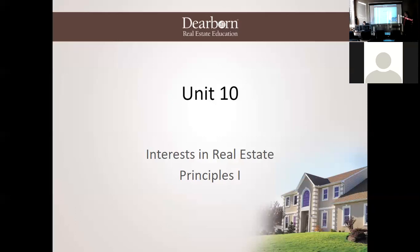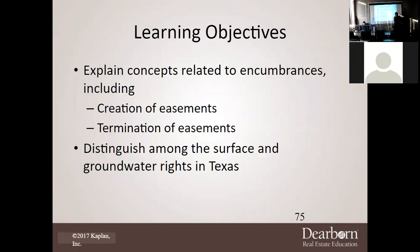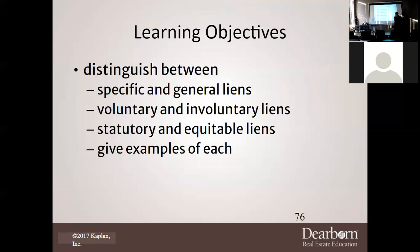Our learning objectives for tonight: identify the limitations on ownership rights imposed by government action; describe the various estates in land and the rights and limitations they convey; list the nine lien rights that are foreclosable against Texas homestead; explain concepts related to encumbrances including creation and termination of easements; and distinguish among surface and groundwater rights in Texas. We'll also distinguish between specific and general liens, voluntary and involuntary liens, statutory and equitable liens, and give examples of each.